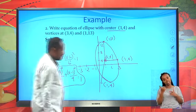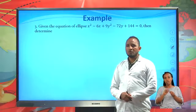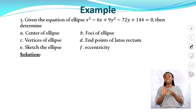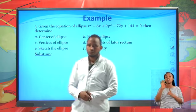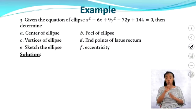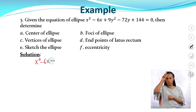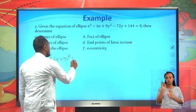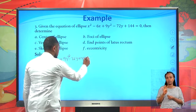Now let's see the last example. Given the equation of the ellipse: x² − 6x + 9y² − 72y + 144 = 0, determine the center, foci, vertices, endpoints of latus rectum, sketch the ellipse, and find its eccentricity. To find these values, first write this equation in standard form.